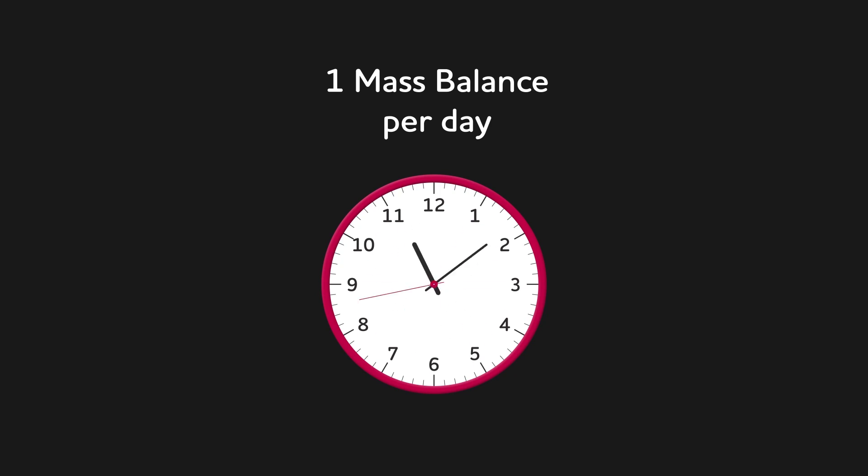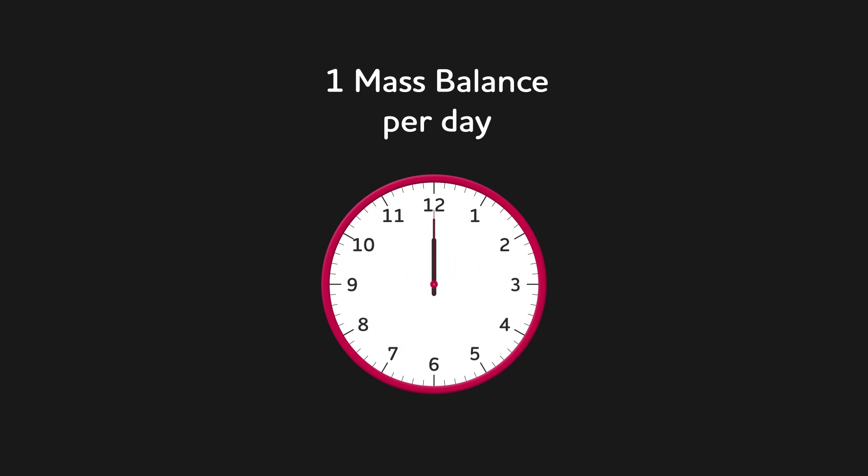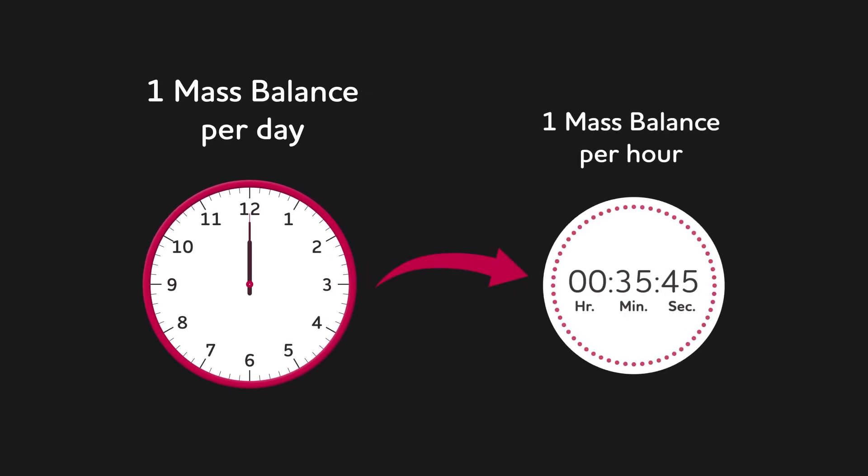We can now predict the plant network in real time using graph algorithms and ML algorithms. Wherever there are no flow measurements, we use machine learning models and domain knowledge to predict the flow measurements in real time. We have reduced manual corrections from 400 to as few as 10 to 15, and reduced mass balance frequency from once per day to once per hour.